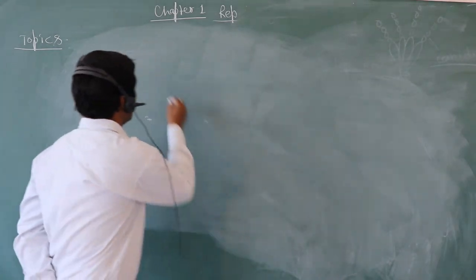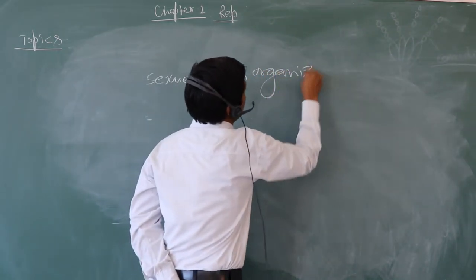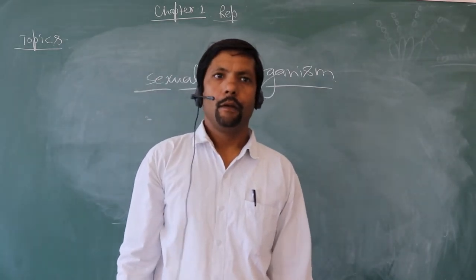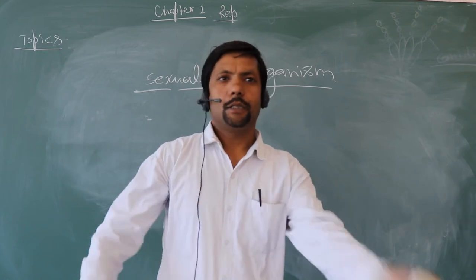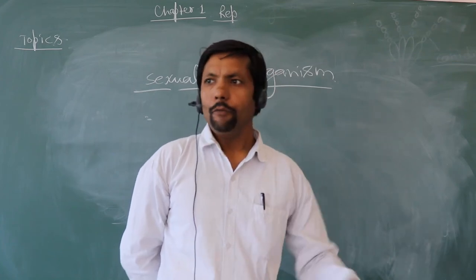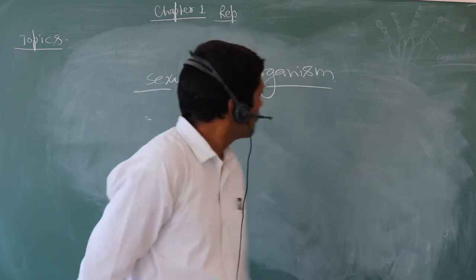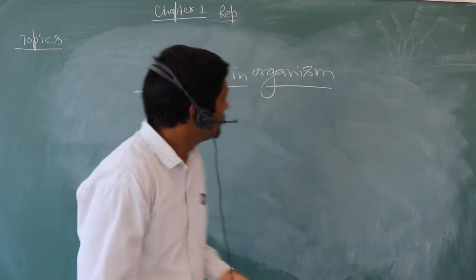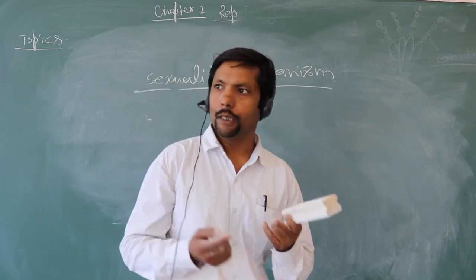Now come to the next heading: sexuality in organisms. In some animals and plants, both reproductive organs are present in the same body, while in human beings the males and females are separated. There are two types: one is called monoecious, while the other is called dioecious. Monoecious and dioecious are terms used especially for plants.